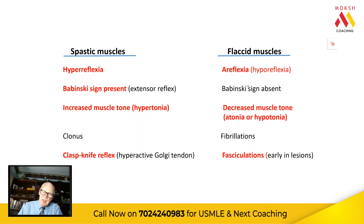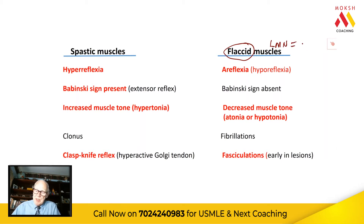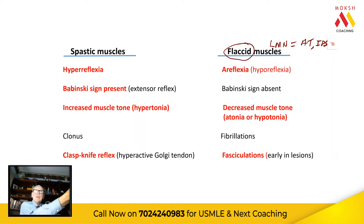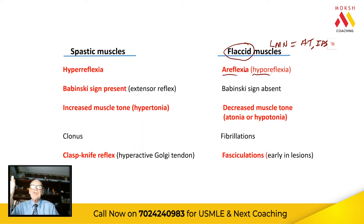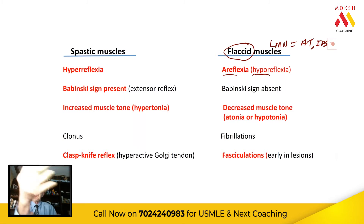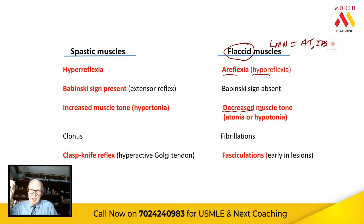Let's look at flaccid first. Flaccid is a lower motor neuron lesion. Lower motor neuron lesions present at the level and ipsilateral. So if you tap my biceps tendon and there's no reflex or very minimal, you have hypo, decreased or no reflexes. That's a classic sign of a lower motor neuron lesion — hyporeflexia. And because of the lack of contraction, the other classic lower motor neuron sign is loss of muscle tone, atonia or hypotonia. Those two are the most classic signs of a lower motor neuron lesion.